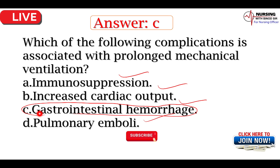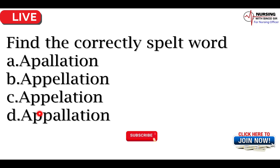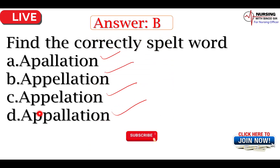Now we can come back to the next question। Find the correctly spelled word। Options: Apalation, Appelation, Appellation, Apalation। तो कौनसा होगा — सही answer put up करेंगे। यहाँ पर जरूर याद रखेंगे B option — A-P-P-E-L-L-A-T-I-O-N।